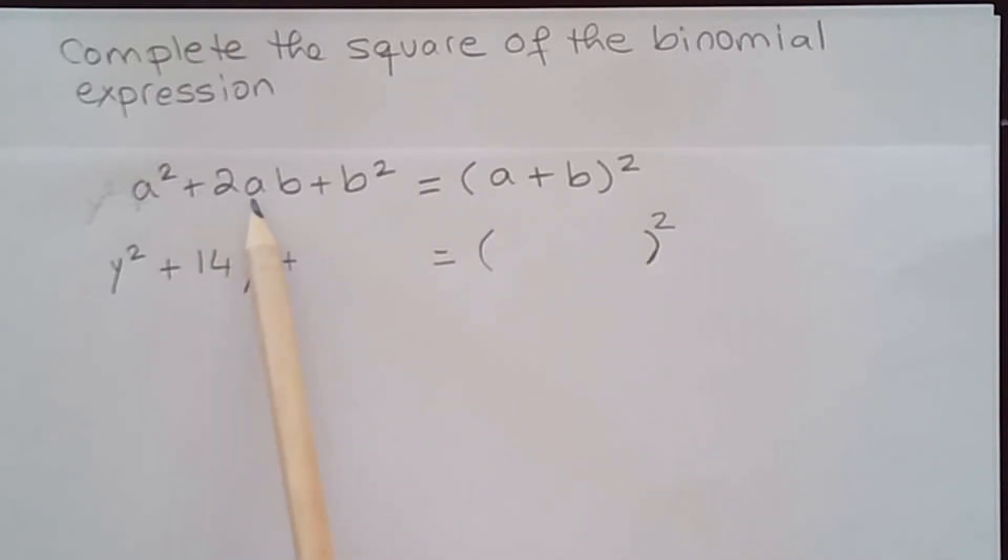If you notice, the middle term has b in it but also has 2a. But a is none other than the variable you have here squared. So in this case this would be a², so that means a is equal to y. And then the middle term, this one would be a as well. So what do we have left?